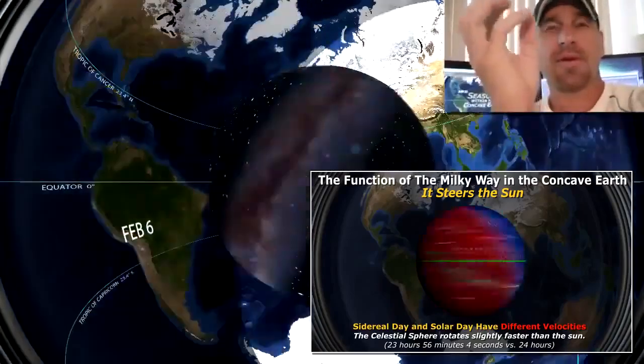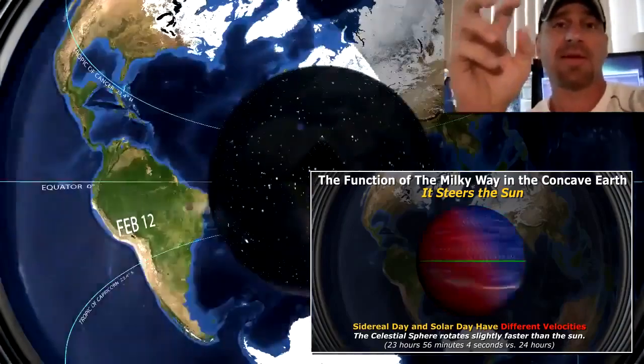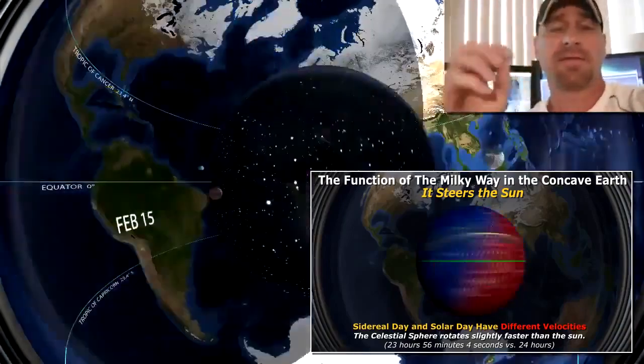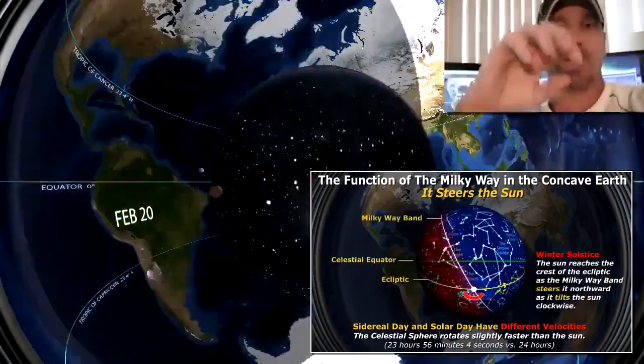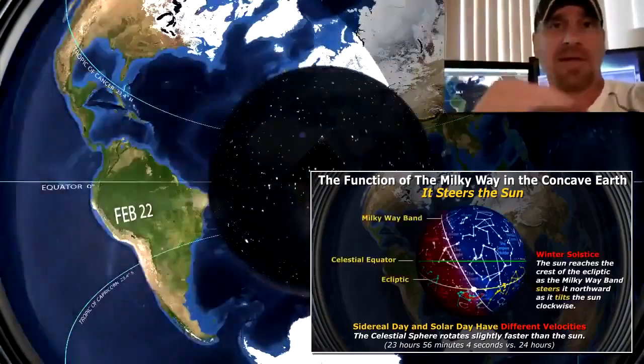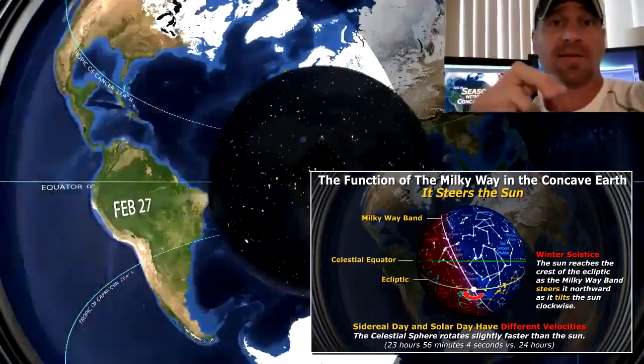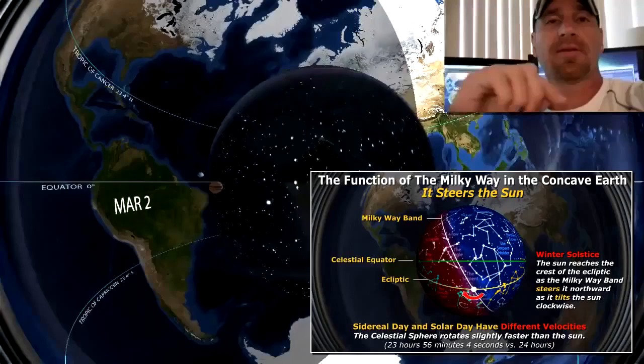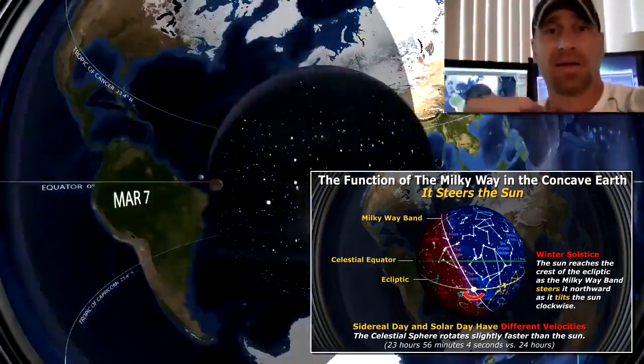So when it crosses that plane, it steers the Sun in the other direction. Like when it's up north like that, it's gonna steer the Sun south, and then conversely the same when it goes down south—when the Sun goes down south, when it crosses that plane, it's gonna steer the Sun back up north. So it's all being influenced by that dividing line, that Milky Way dividing line; it has a purpose, a function.